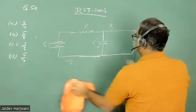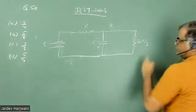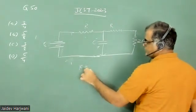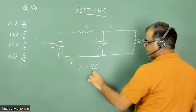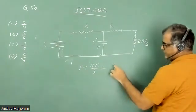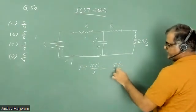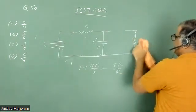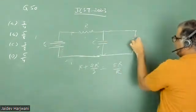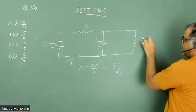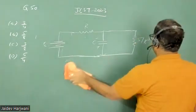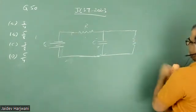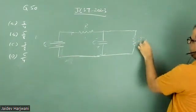Again, this R is in series with this 2R/3. So R plus 2R/3 will give me 5R/3. So let me remove this resistance also and put a single resistance here — five R upon three, that is 5R/3.